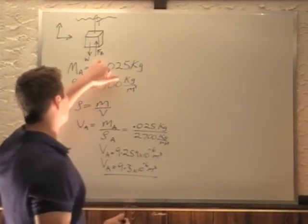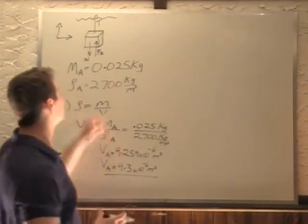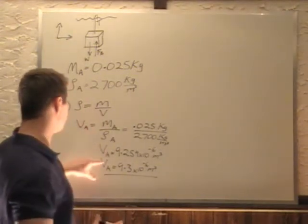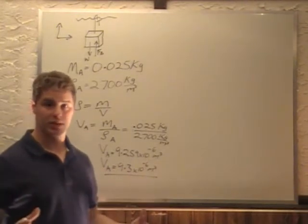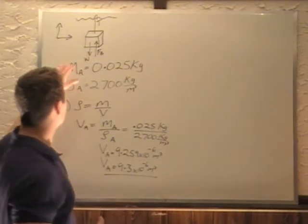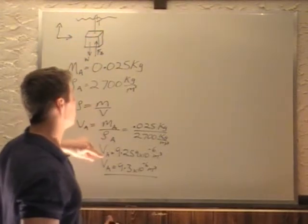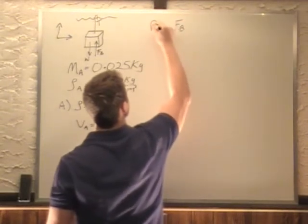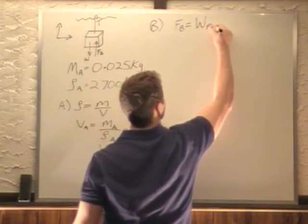Since we know that the buoyancy force is equal to the weight of the fluid displaced, and we know the volume of that, the volume of this aluminum is going to be the volume of the fluid displaced. We're going to use that to figure out exactly how much the weight of the fluid is, and that will give us our buoyancy force. So, buoyancy force, this is part B, is equal to weight of the fluid displaced.